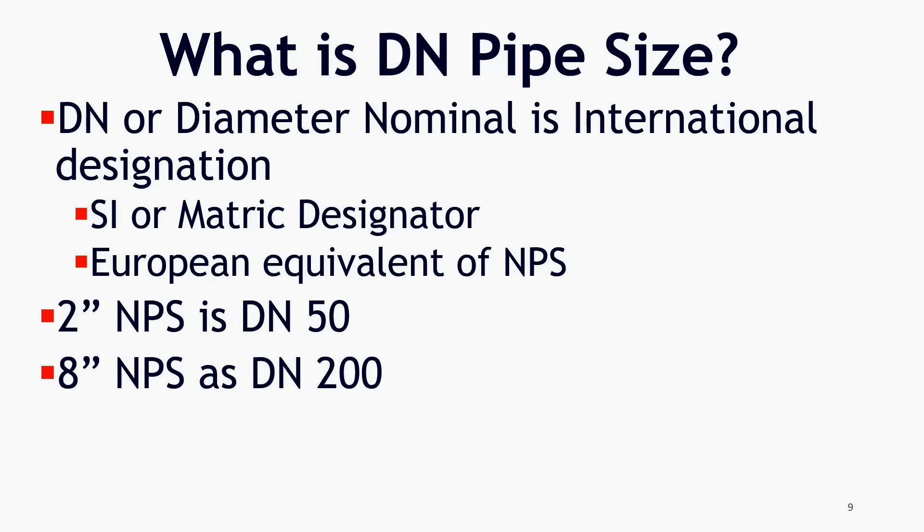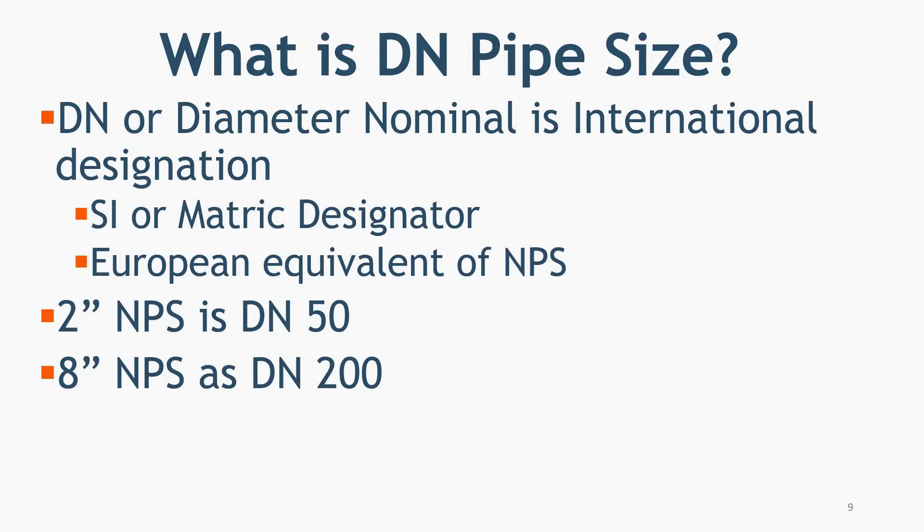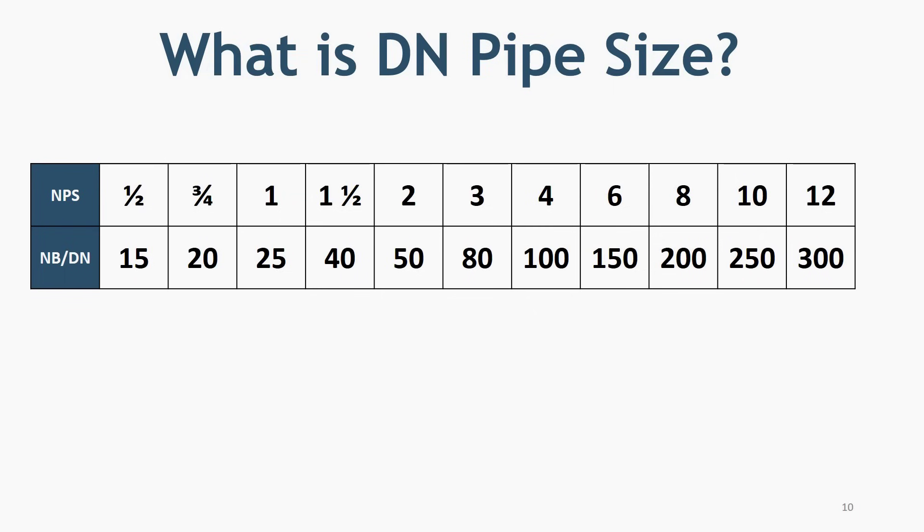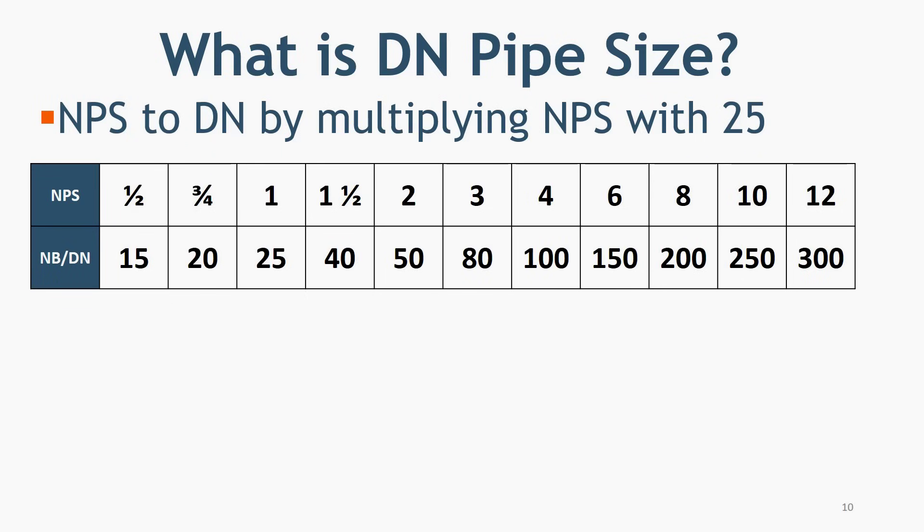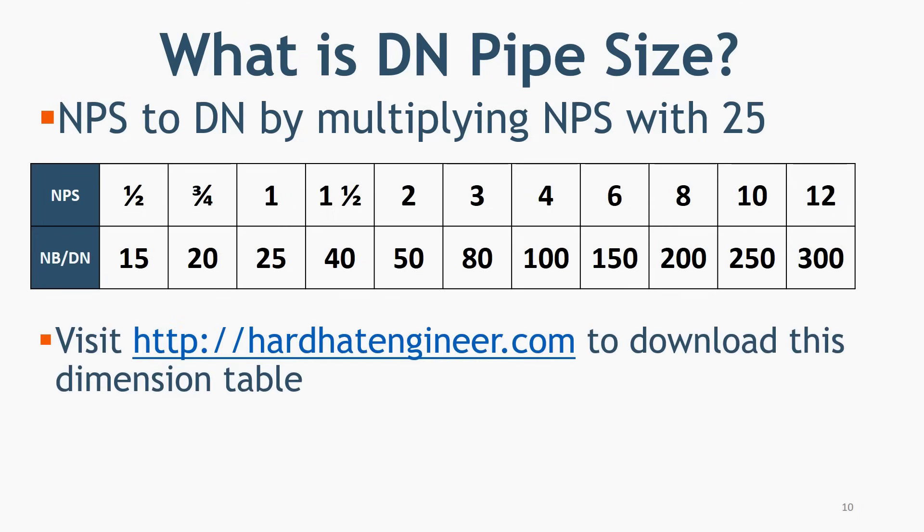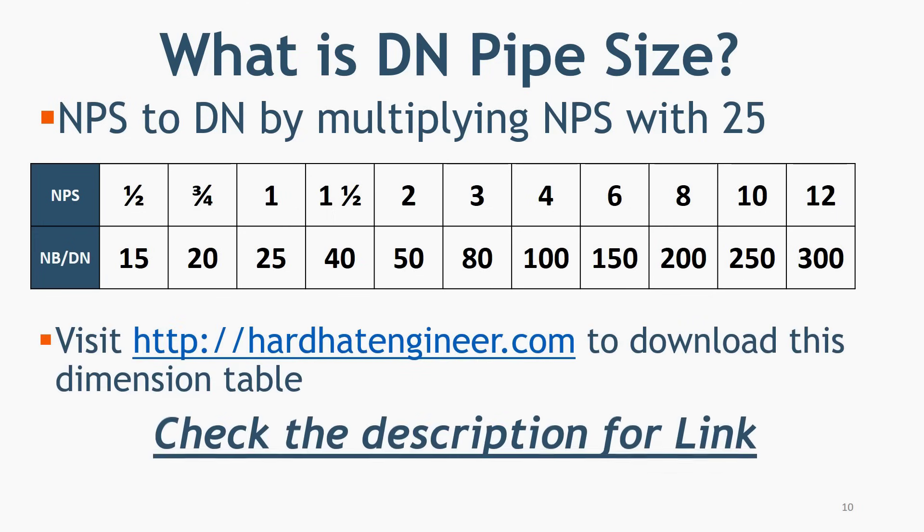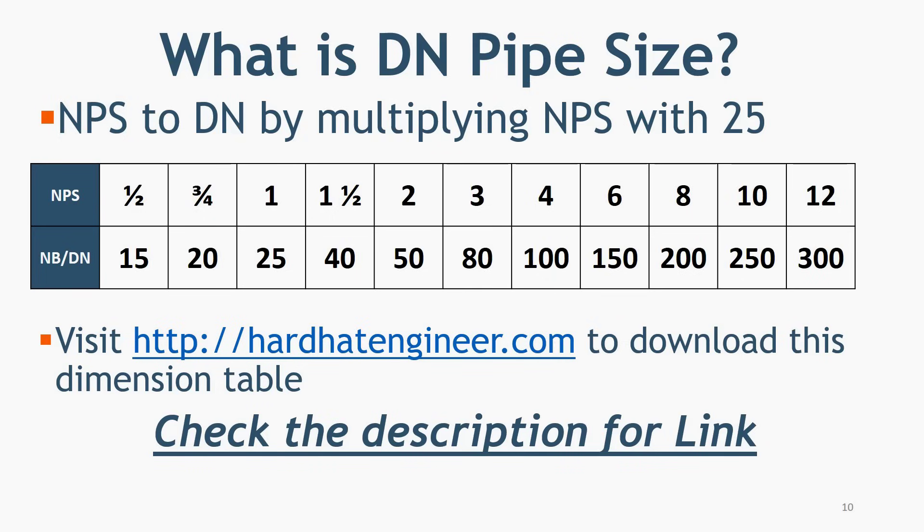2 inch pipe is simply mentioned as DN 50. 8 inch NPS as DN 200. You can convert NPS to DN by multiplying NPS with 25. Check the table for easy understanding. There is no change in other dimensions such as thickness and OD when you use DN. You can visit my website to download this dimension table and also schedule pipe chart for free. Link is given in the description.